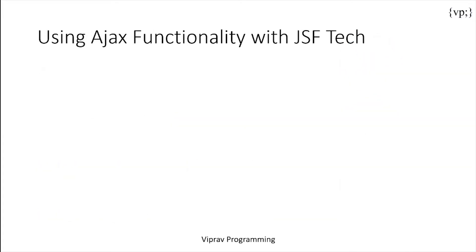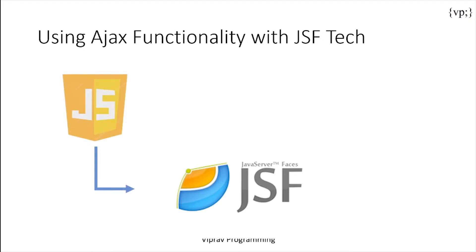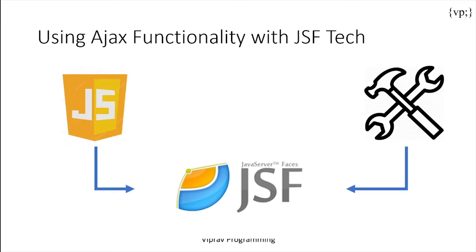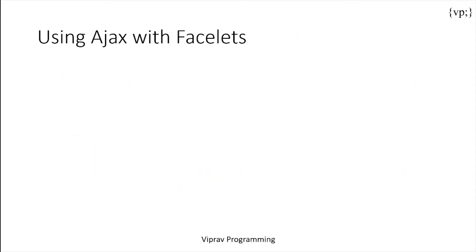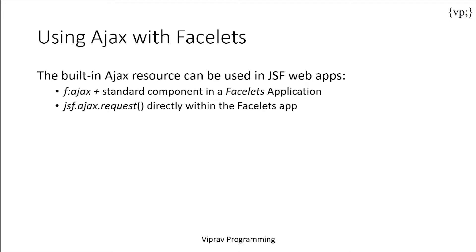Then there's the functionality of AJAX. AJAX can be added to JSF applications by using JavaScript code in the app or using built-in AJAX resource libraries. In Java EE 7, AJAX is built-in. And then there's AJAX using facelets — the built-in AJAX resource can be used in JSF applications. For example, with f:ajax plus a standard component in a facelets application, which adds AJAX functionality to any UI component without additional coding and configuration. Then there's the JSF AJAX request, which directly allows customized control of component behavior.